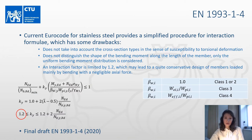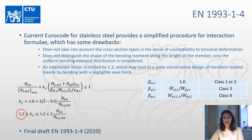The current Eurocode for stainless steel provides a simplified procedure for interaction factors, which has some drawbacks. However, the new version of the Eurocode is being prepared. It includes, among other things, a new procedure for the interaction factors, which were developed on the basis of research from Imperial College.